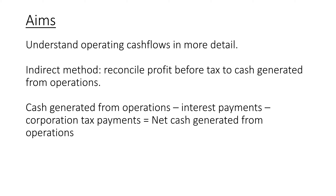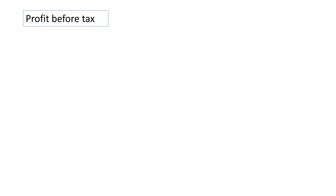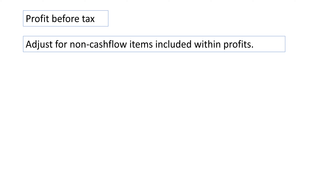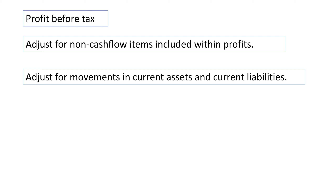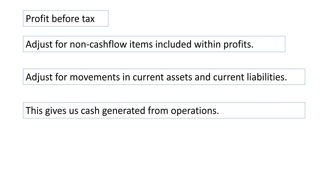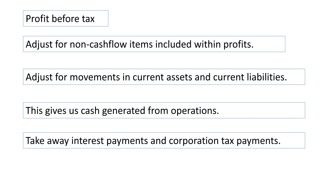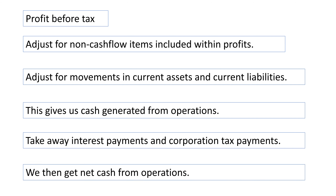Once you have the cash generated from operations — that's the hard bit — you take away interest payments and corporation tax payments, and that gives you the net cash generated from operations. So let's have an overview of the process: we start with profit before tax, prepared under the accruals basis, adjust for non-cash flow items, adjust for movements in current assets and liabilities, and that gives us the cash generated from operations. There are only six steps to learn.